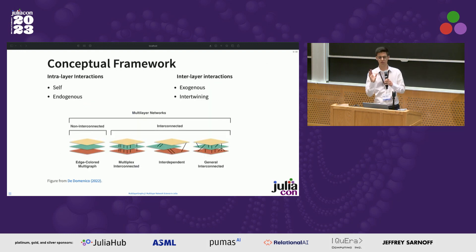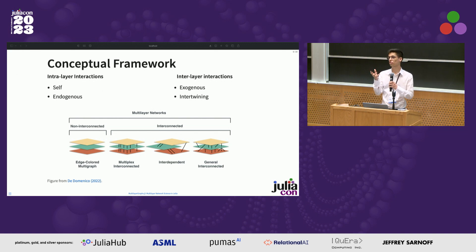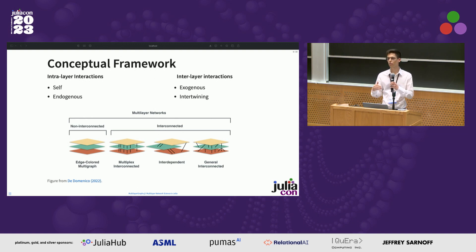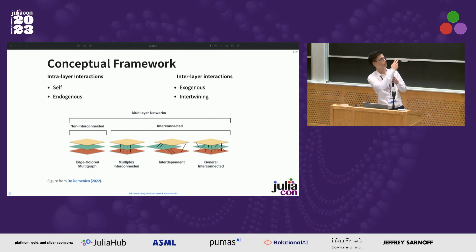These concepts allow us to distinguish four types of interaction: self-interaction, which is between any vertex and itself; endogenous interaction, between any two distinct vertices within the same layer; exogenous interaction, between any distinct vertices within distinct layers; and intertwining, involving distinct vertices belonging to distinct layers but representing the same underlying physical node. Here we delineate the basic taxonomy of all multilayer graph types, or classes, that are all implemented in MultilayerGraphs.jl.